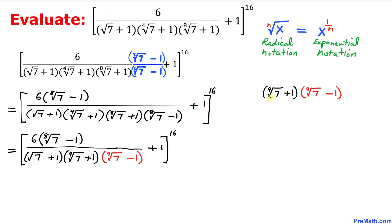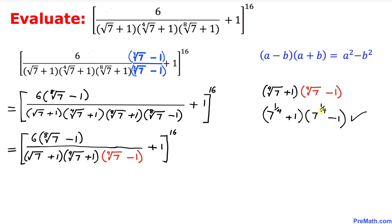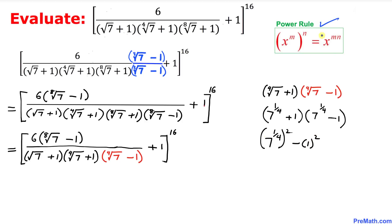In the next step, let's focus on this next part in the denominator. We are going to convert these radical numbers into exponential notation, so this could be written as 7 to the power 1/4 plus 1, times 7 to the power 1/4 minus 1. Since this represents the product of a sum and a difference, we use the formula again, giving us 7 to the power 1/4, squared, minus 1 squared.